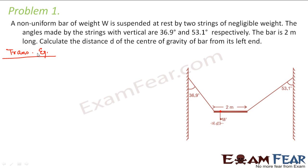Translational equilibrium requires that the net force along the horizontal direction should be equal to zero. The two strings have tensions T1 and T2. The vertical component of T1 is T1 cos 36.9 degrees, and since the angles are alternate angles, the horizontal component is T1 sin 36.9 degrees.